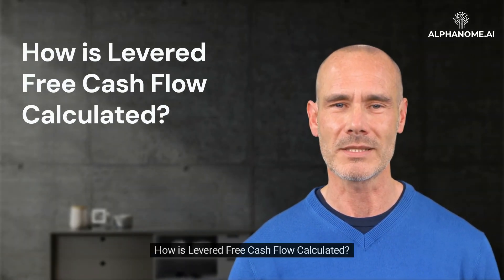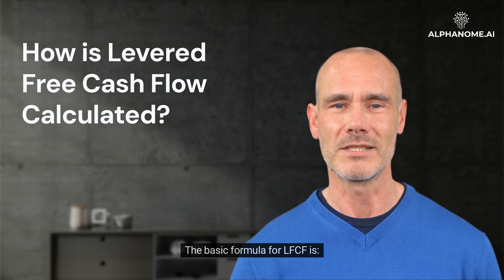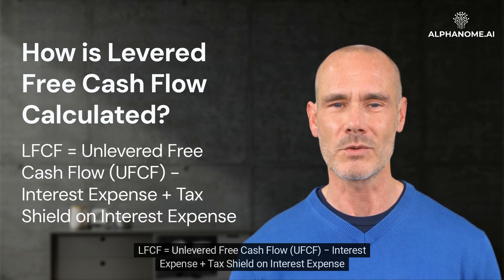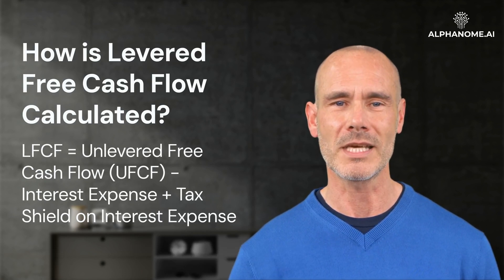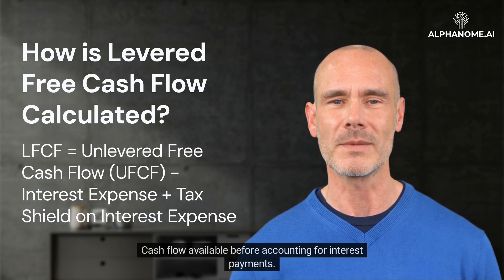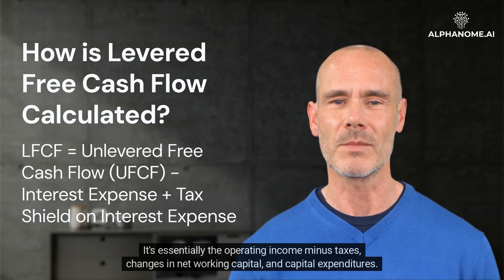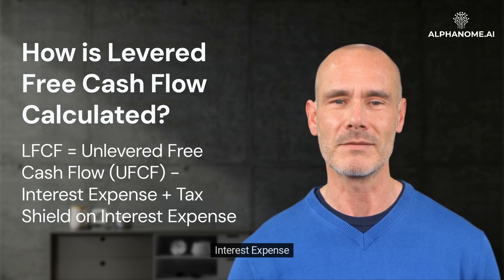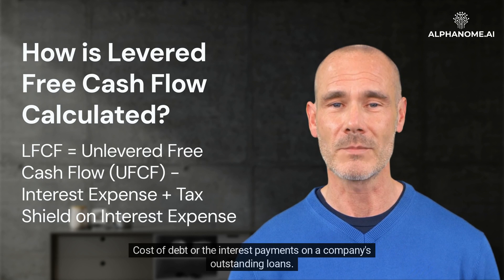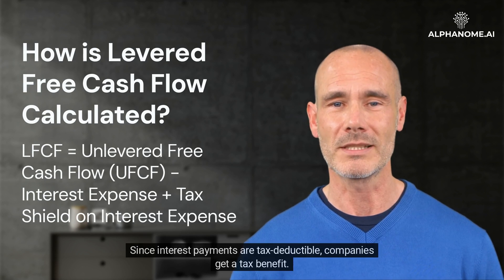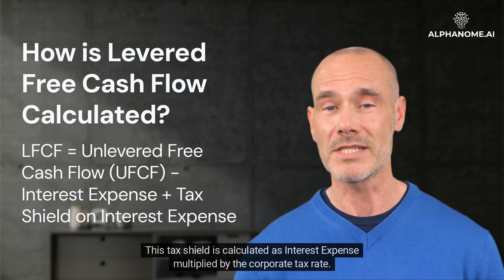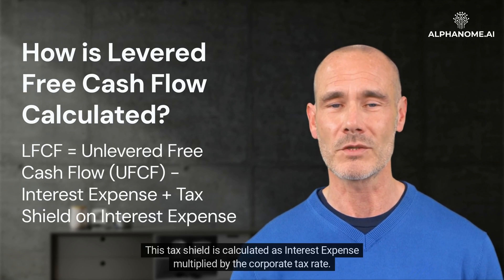How is Levered Free Cash Flow calculated? The basic formula for LFCF is: LFCF equals Unlevered Free Cash Flow (UFCF) minus Interest Expense plus Tax Shield on Interest Expense. Where UFCF is the cash flow available before accounting for interest payments — essentially operating income minus taxes, changes in net working capital, and capital expenditures. Interest Expense is the cost of debt or the interest payments on a company's outstanding loans. The Tax Shield on Interest Expense reflects that since interest payments are tax-deductible, companies get a tax benefit, calculated as interest expense multiplied by the corporate tax rate.